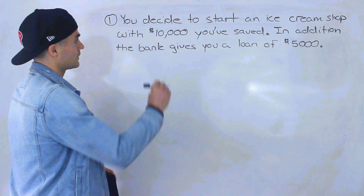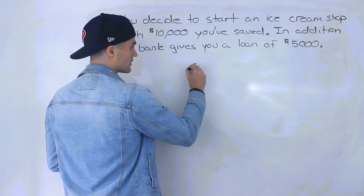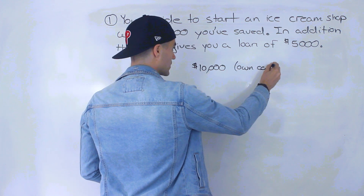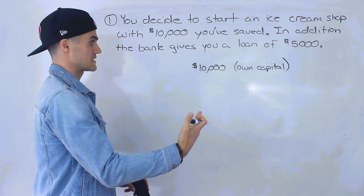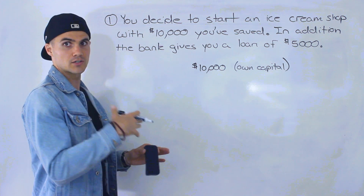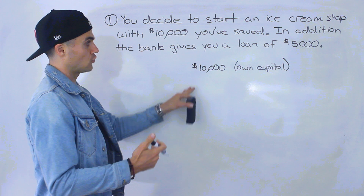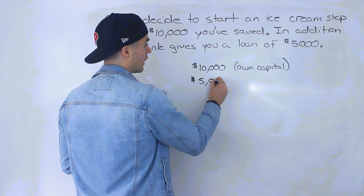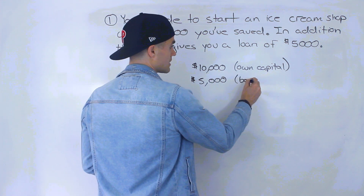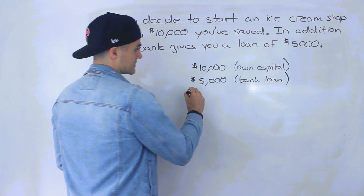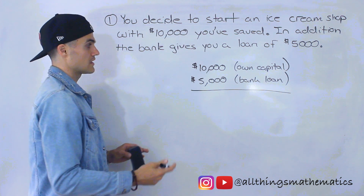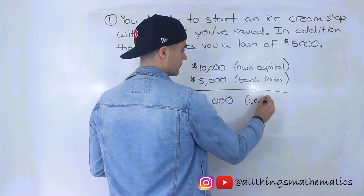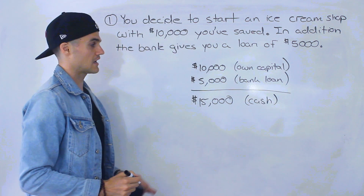So let's see what we've got here. You decide to start an ice cream shop with $10,000 you've saved — that's your own capital, maybe saved from a previous job. Now you want to start your own business, so you take that $10,000. Then you went to the bank, showed them your business plan, told them you have $10,000 of your own money that you're investing, and you have good credit, so they gave you a loan of $5,000. That means your business is starting with $15,000 worth of cash.